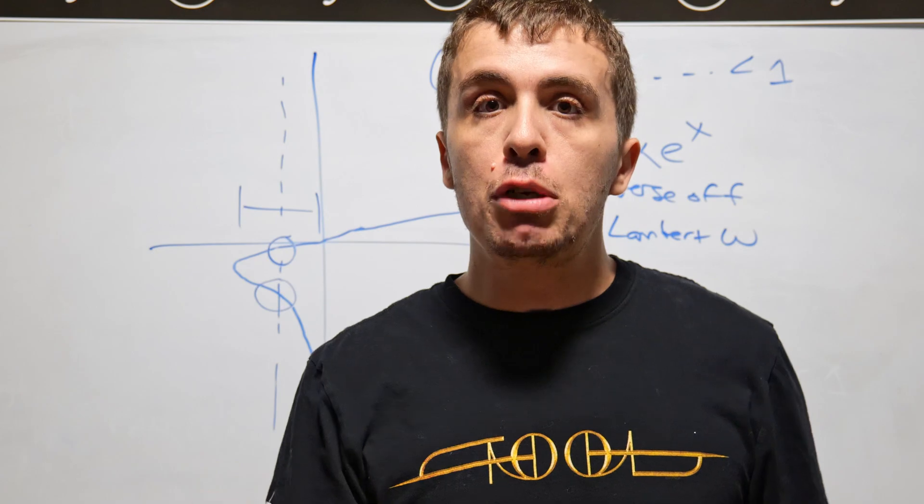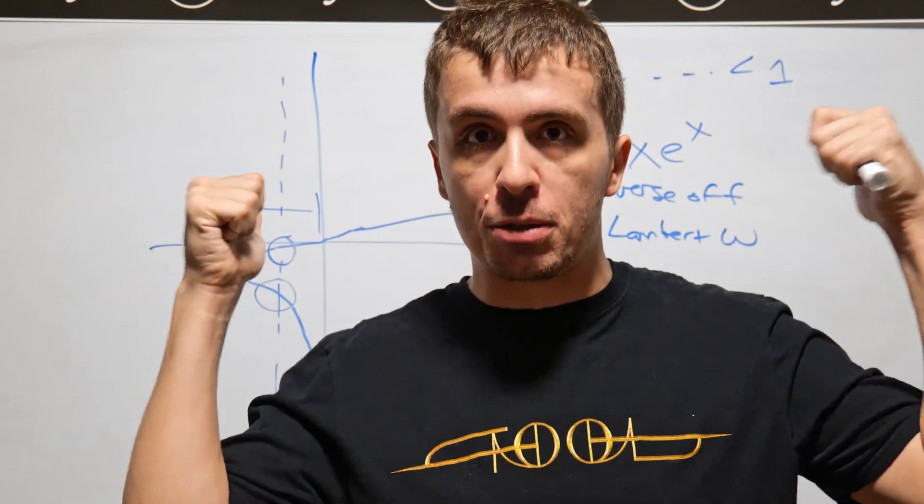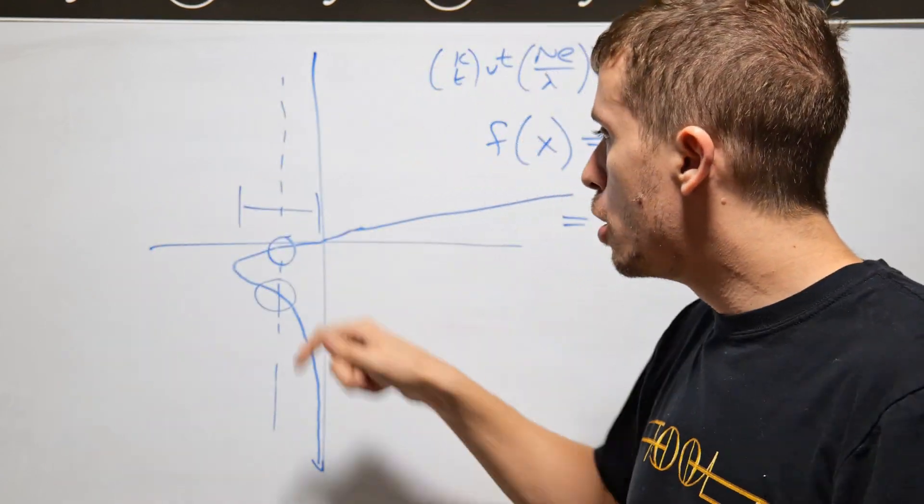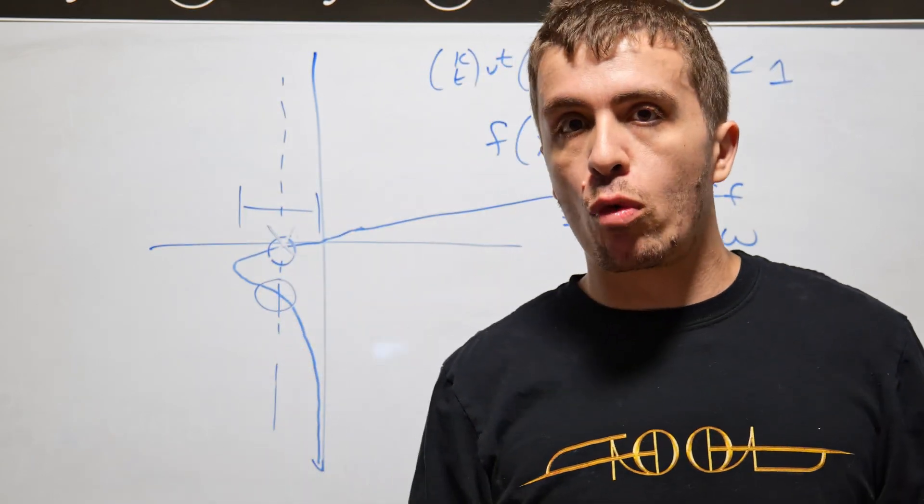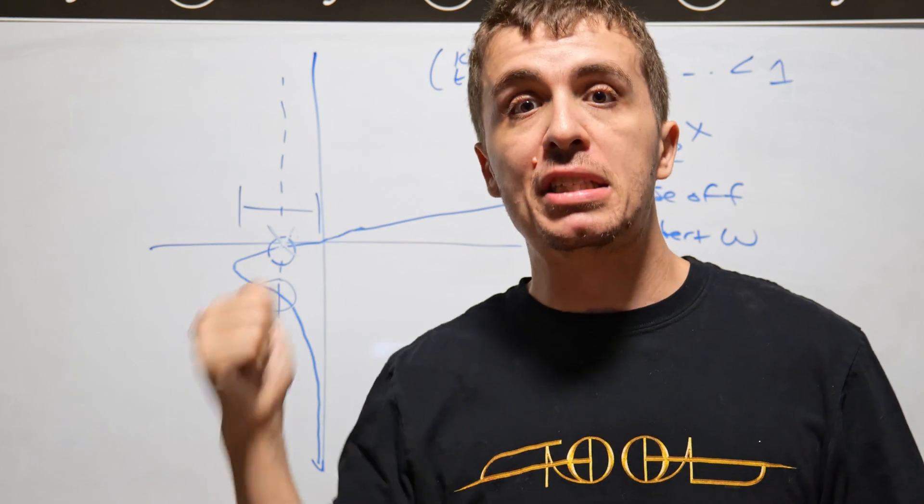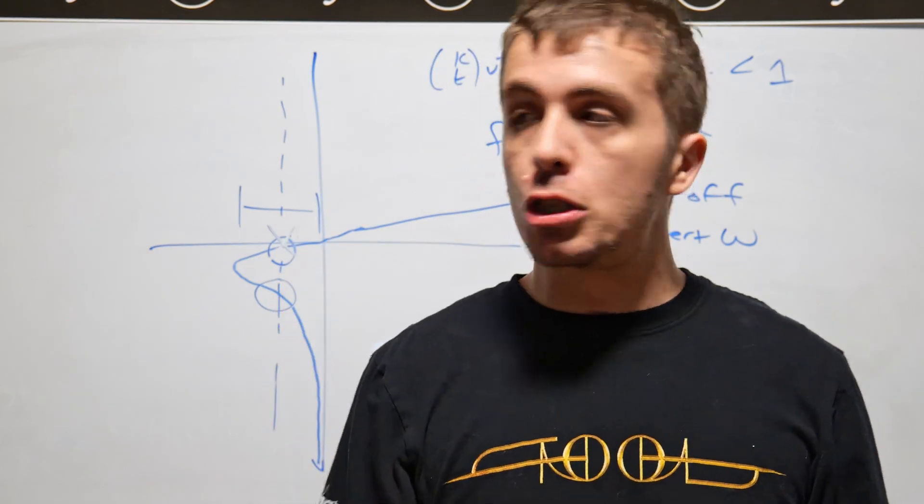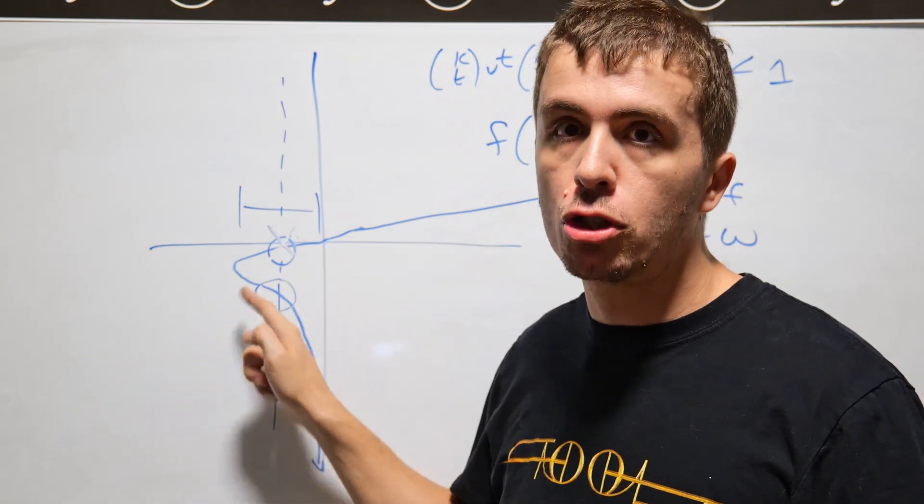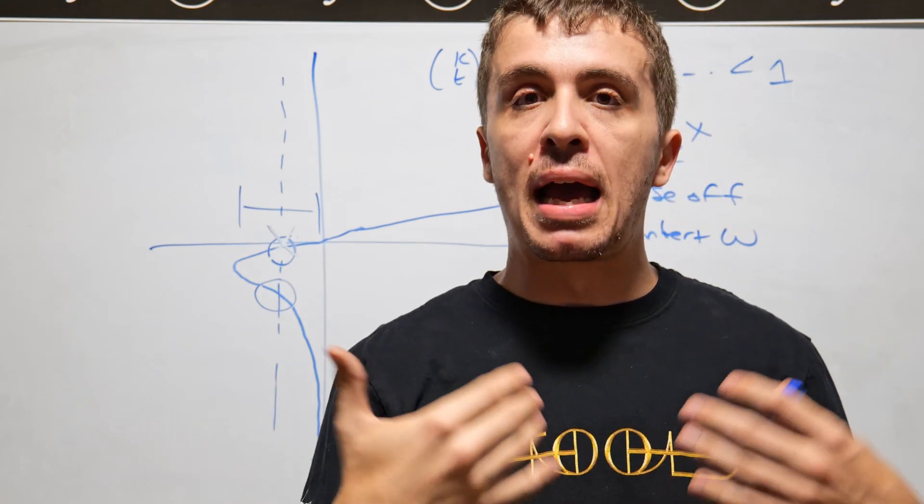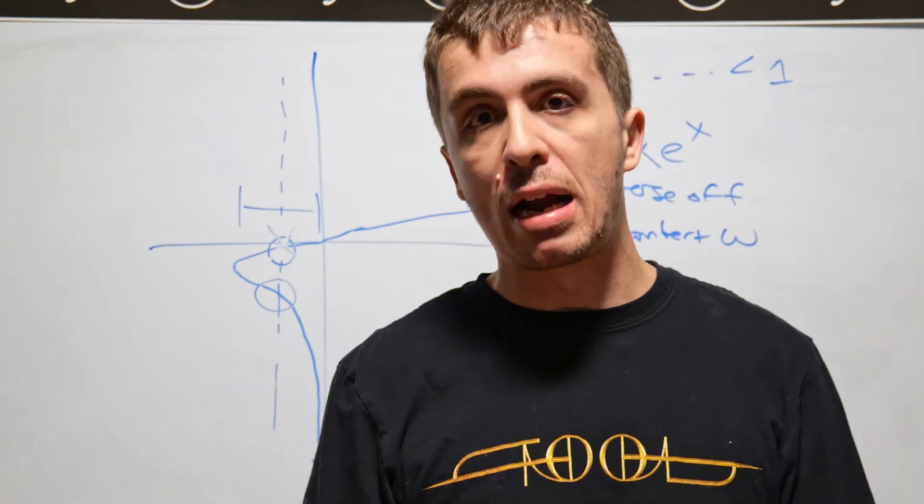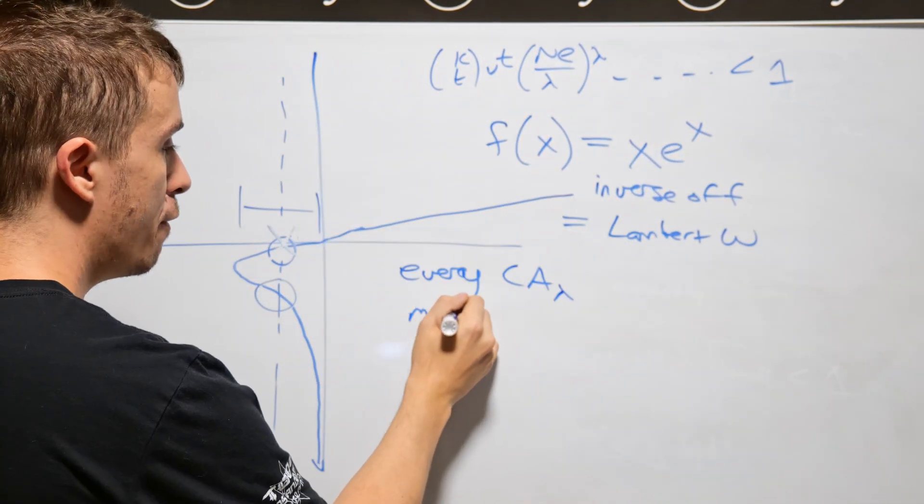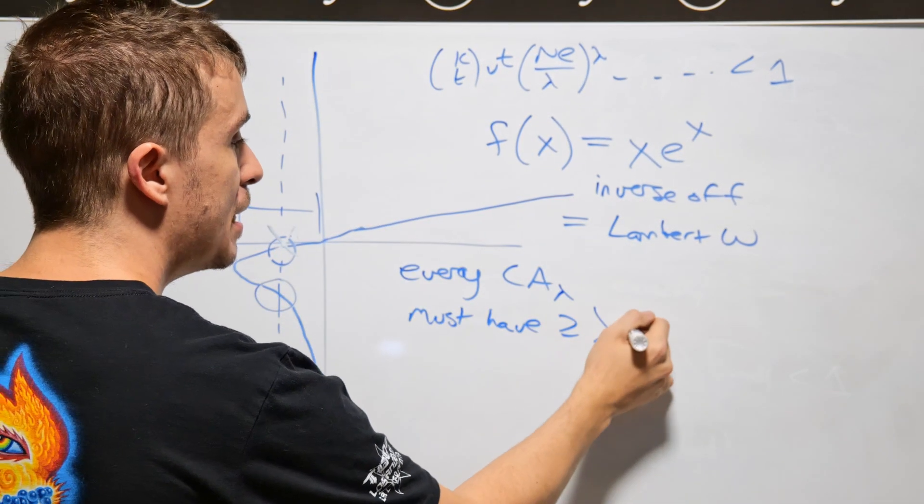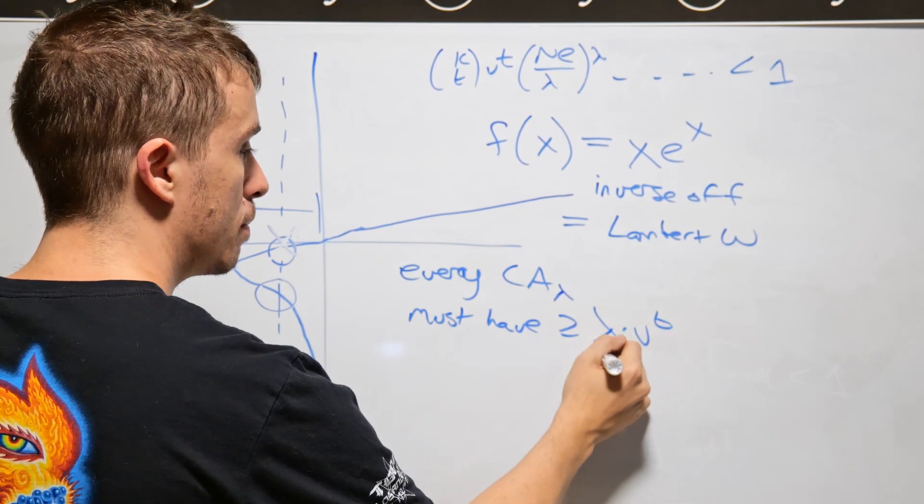And so what you need to do if you're going to be proving asymptotics like this is to show that this top solution cannot possibly occur. And all that you do is you look at basic properties of this Lambert function and show if you pick the top solution, then you are going to have fewer than the requisite number of rows. So every covering array must have at least lambda times v to the t rows. Always.